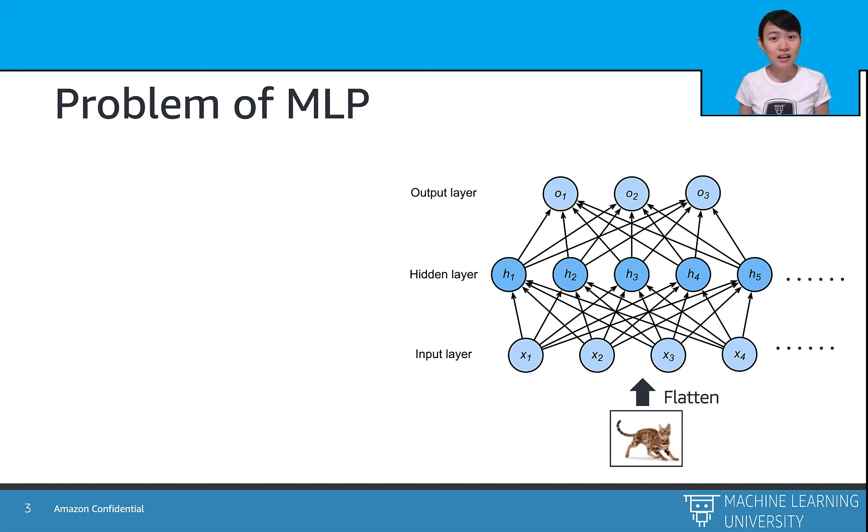So first let's have a recap on the MLP, which is the standard neural networks. Suppose we have an image classification task and we want to know whether an image is a cat or dog or neither. Here is a neural network with one hidden layer and the input X_i are each of the pixel features of the image.